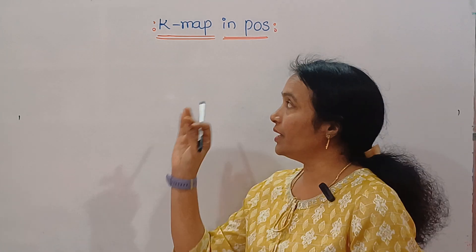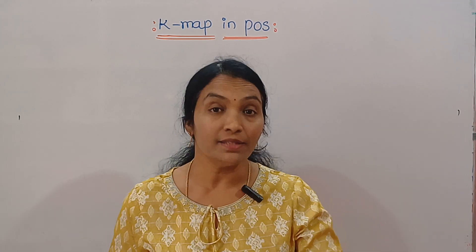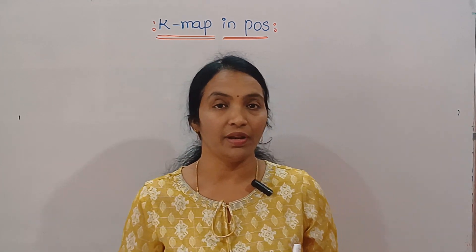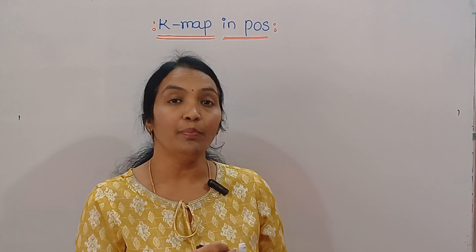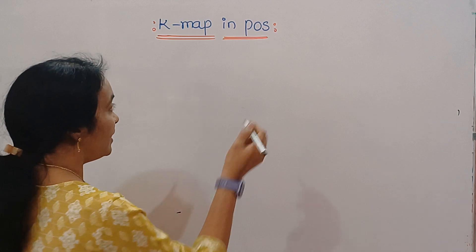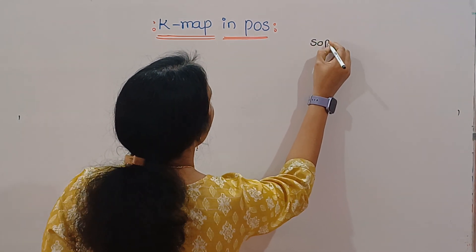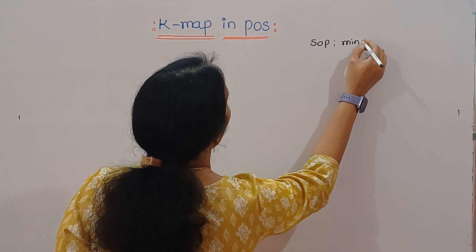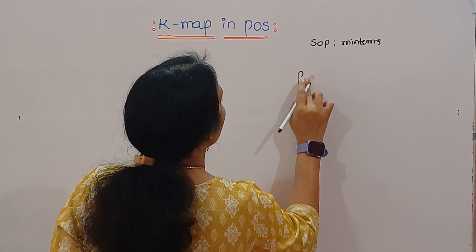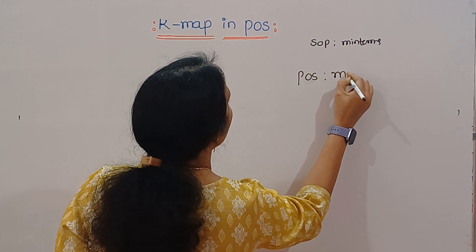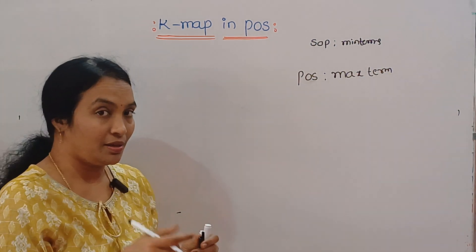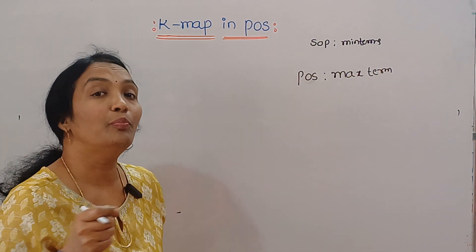This video is called POS — Product of Sums. Now we can tell you how to represent sum of products. This is the product of sums. What is the sum of products? In the previous video, we did SOP. When we are doing SOP, we can find out the Minterms. Now we are doing POS. In POS, we can find out the Maxterms. That means the product of sums — we can find out the Maxterms.